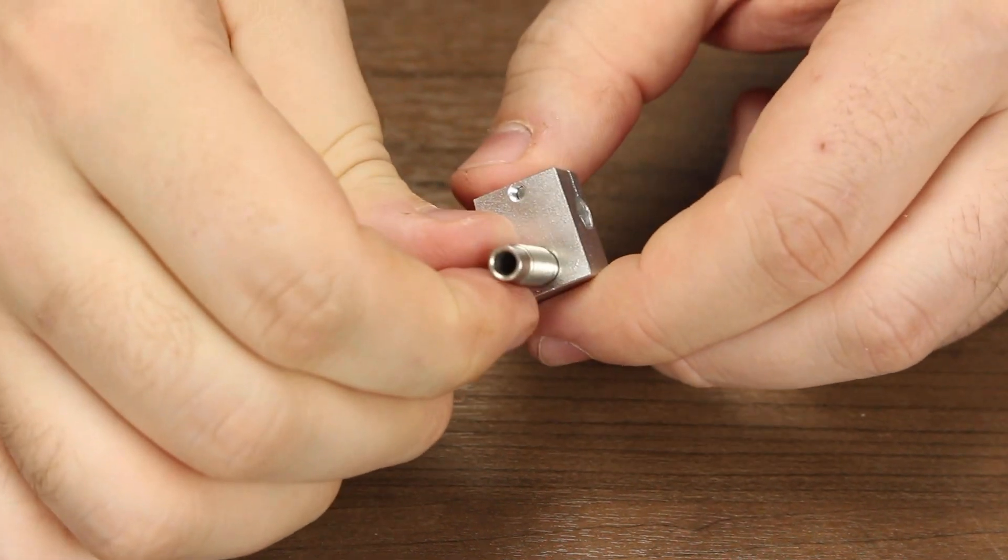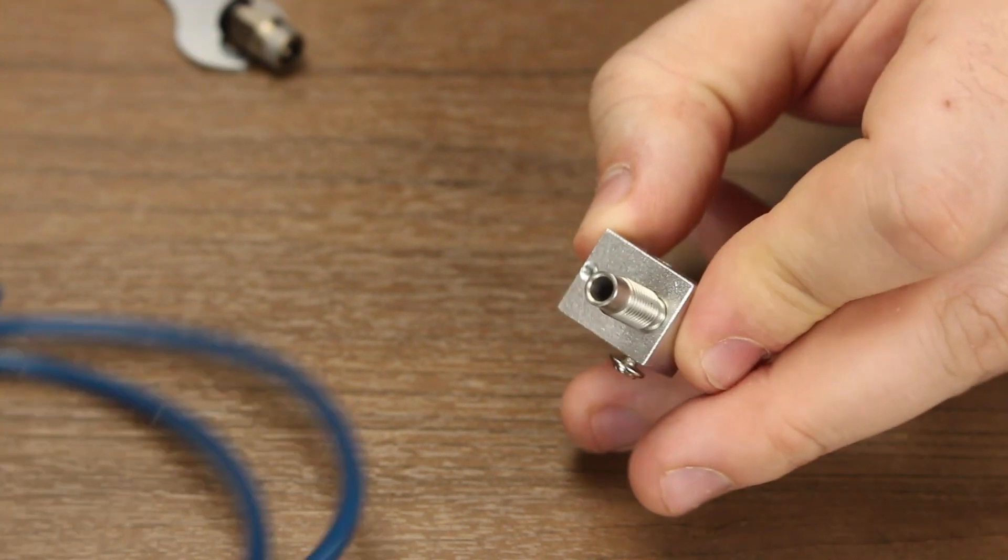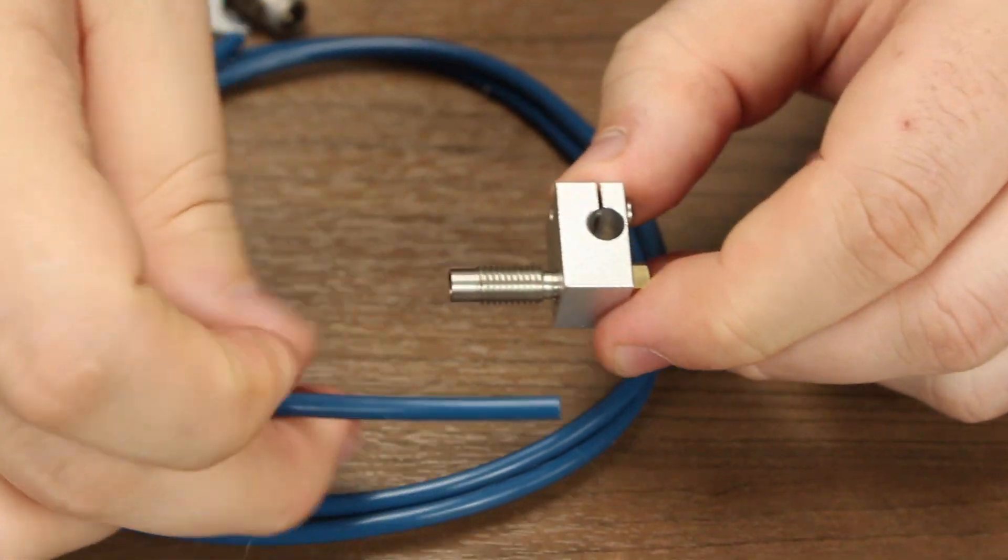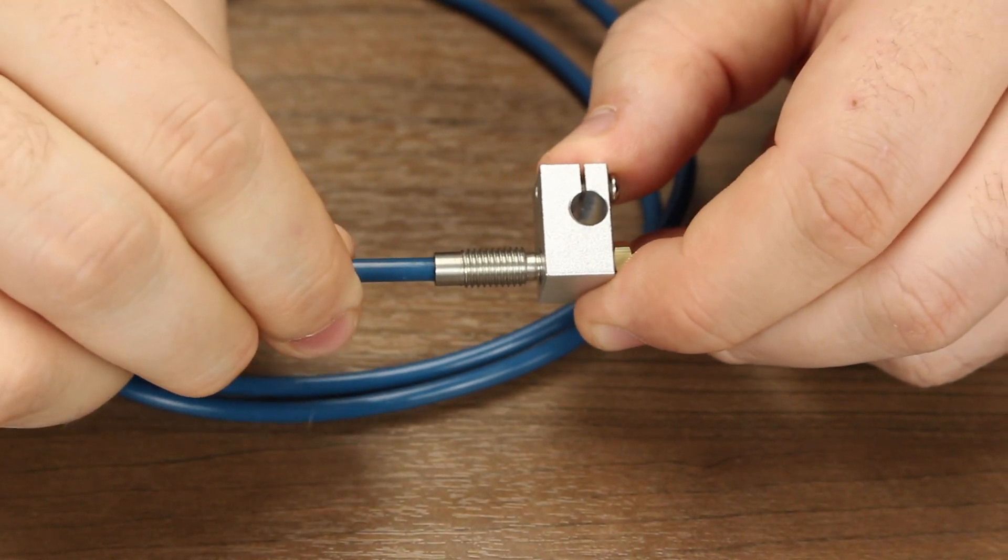You should notice now in this version, when we look in the top of the heat break, you can see all the way down to the top of the nozzle. This means that when we put our PTFE in, the PTFE has to directly touch the top of the nozzle in order to get a good seal.